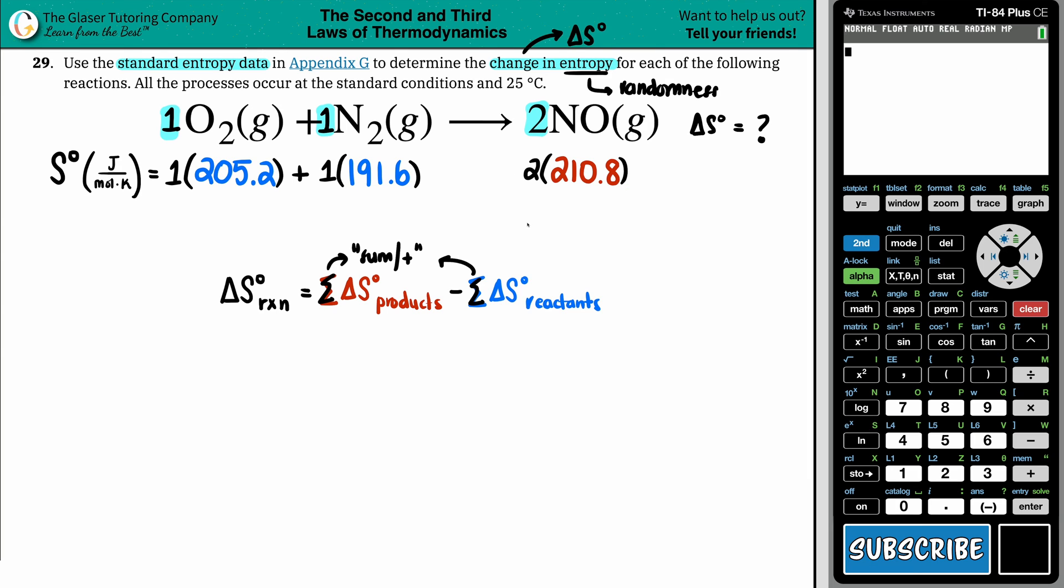So let's go to calc and see what we get. So for the reactants, it's 205.2 plus 191.6. And what do I get there? I get 396.8. And now I just have to multiply by 2. So 2 times 210.8, I get 421.6 for the product side, 421.6.